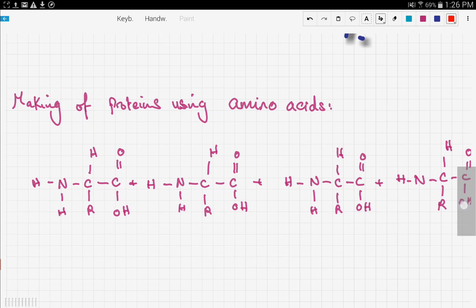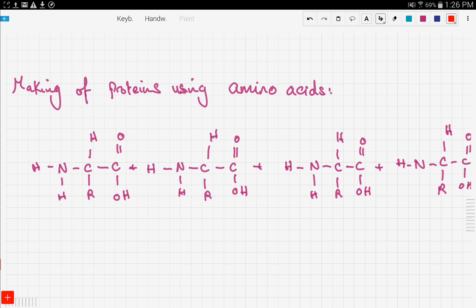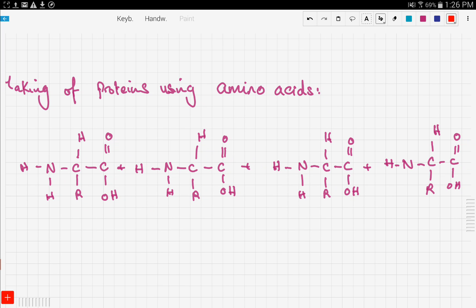Amino acids are made up of nitrogen, hydrogen, oxygen, and sometimes sulfur. Here we have four different amino acids, and they are different because the radicals are different from each other. The radical is the group that differentiates between different amino acids.